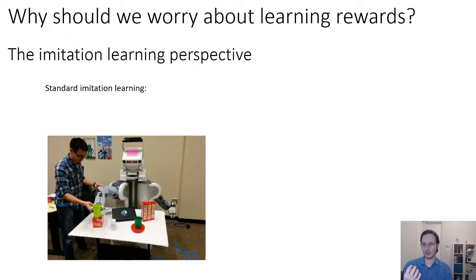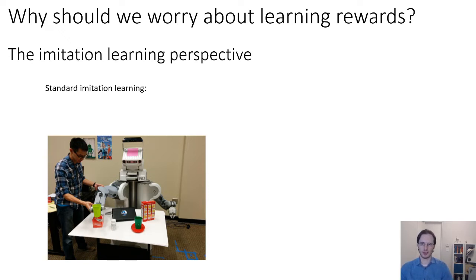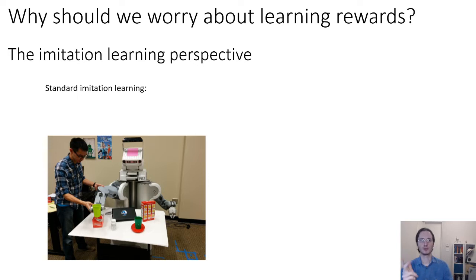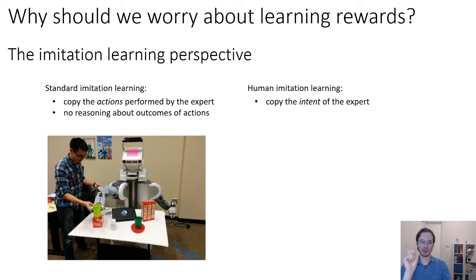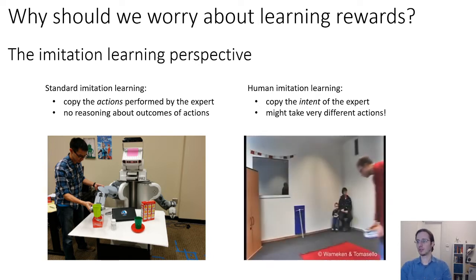However, when humans imitate other humans, we don't actually do it this way. If you imagine teaching a robot through imitation learning, you would maybe teleoperate the robot and move its arms through the motions you want to perform. But when you think of a person imitating somebody, it's not like you need someone to hold you and move your body in exactly the way needed to accomplish the task. You watch somebody and you figure out what it is they're trying to do. Then you attempt to emulate not their direct motions, but rather their intentions. Standard imitation learning deals with copying the actions performed by the expert without reasoning about the purpose of those actions or their outcomes. Human imitation is very different — when humans imitate, we copy the intent of the expert, and this might result in actually very different actions from the ones the expert took, but the same outcome.